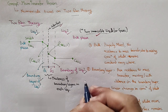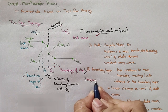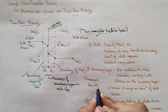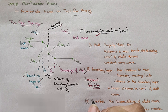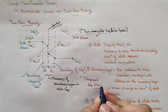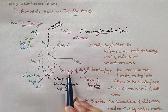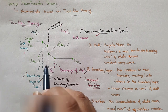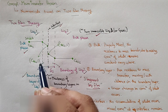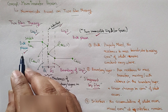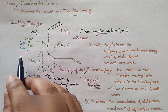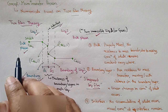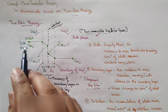These boundary layers are also known as stagnant liquid films — the stagnant liquid film of liquid one and the stagnant liquid film of liquid two. When we move away from the boundary layers, the bulk phase begins. In the bulk phase, we presume it is properly mixed and there is no concentration gradient, meaning the concentration of solute remains constant throughout the bulk phase.